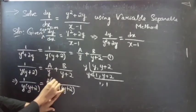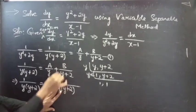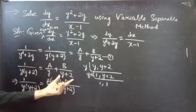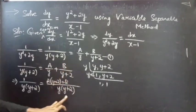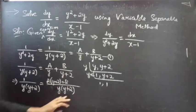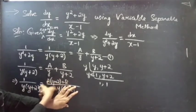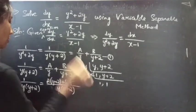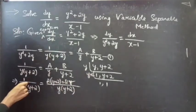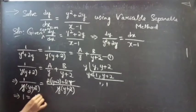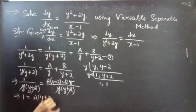You get A(y+2) in the numerator, plus B multiplied by y — since (y+2) is the denominator of the second fraction, multiply B by y. After cancelling y(y+2), this becomes: 1 = A(y+2) + By.